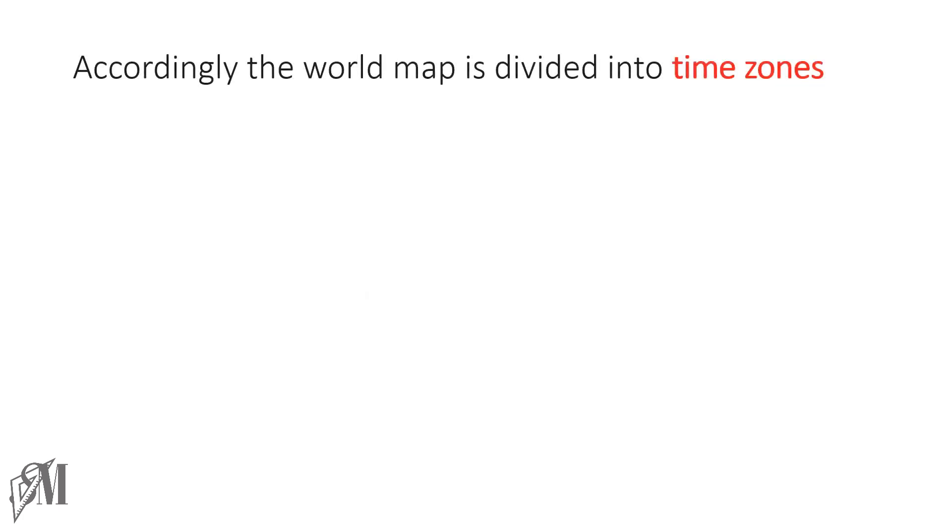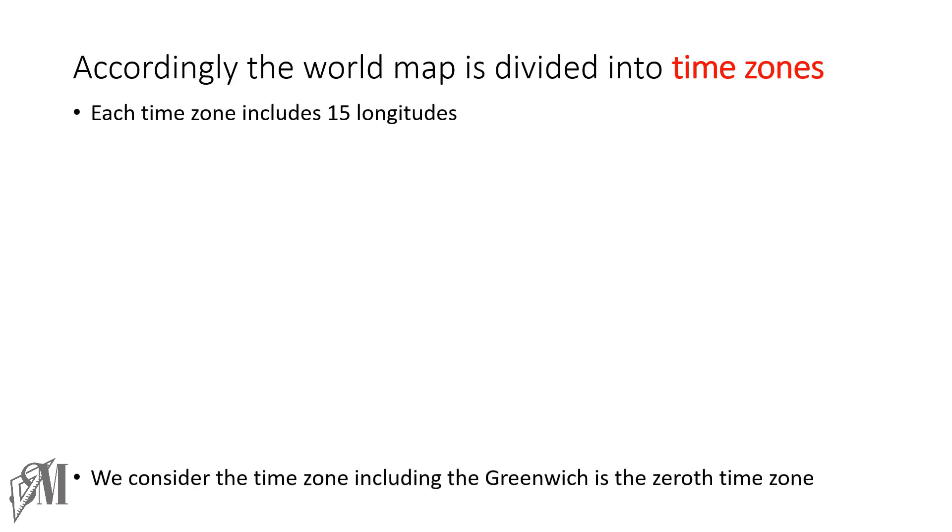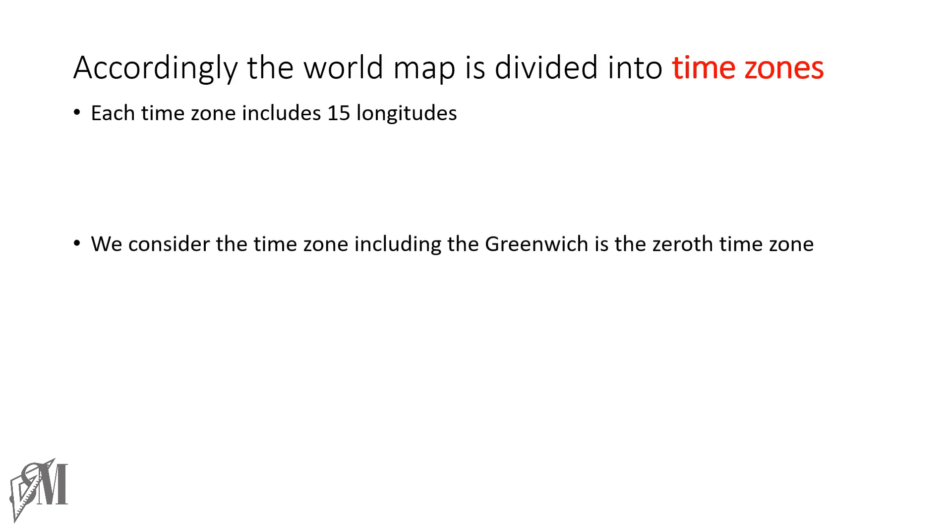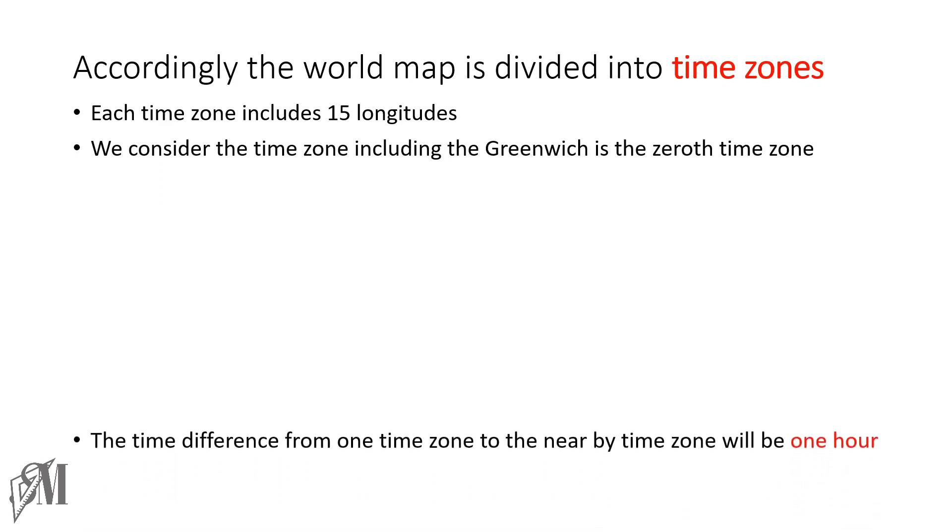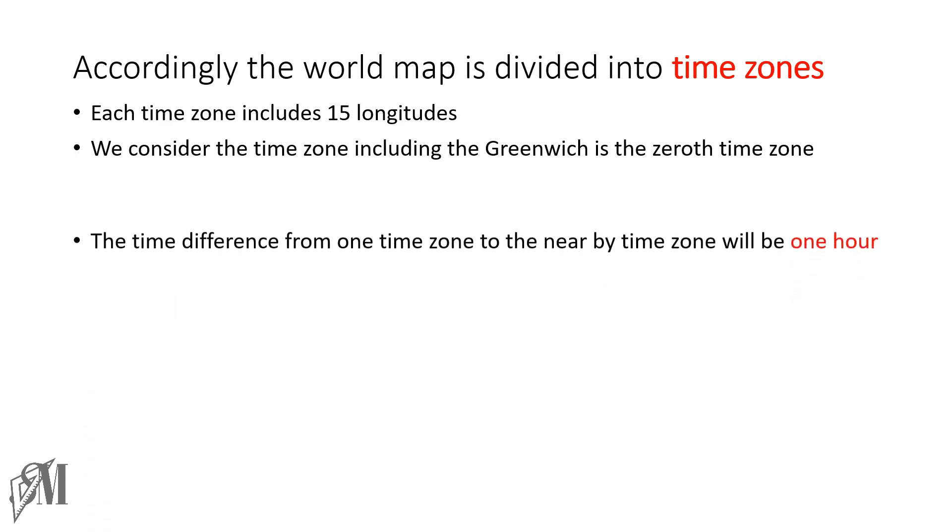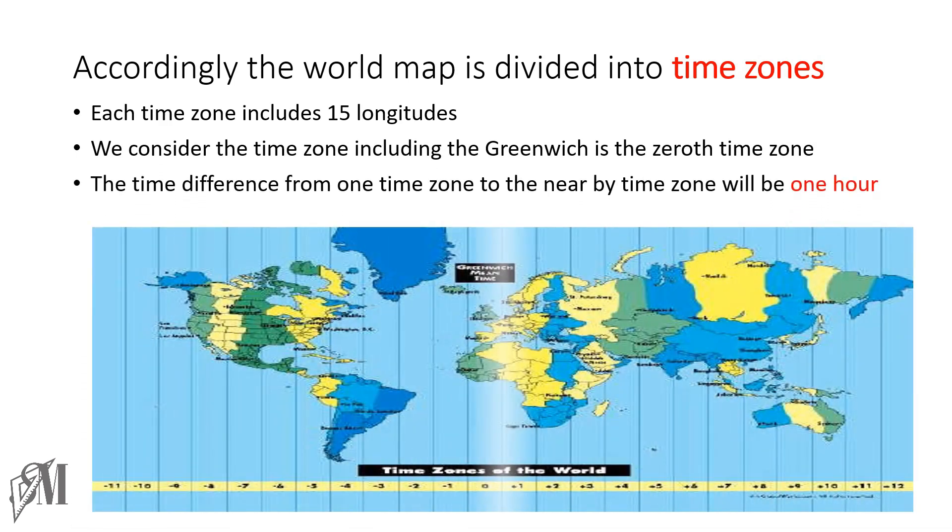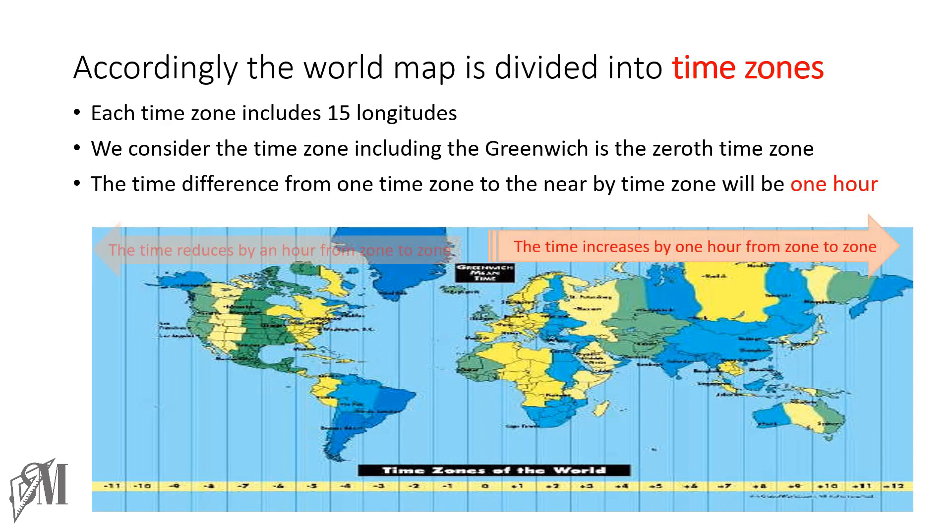Accordingly, the world map is divided into time zones where each time zone includes 15 longitudes, and from one time zone to the next time zone, the time duration is one hour. So if you take the world map, from the Greenwich meridian to the right side, the time increases by one hour, whereas to the left, time decreases by one hour from zone to zone.